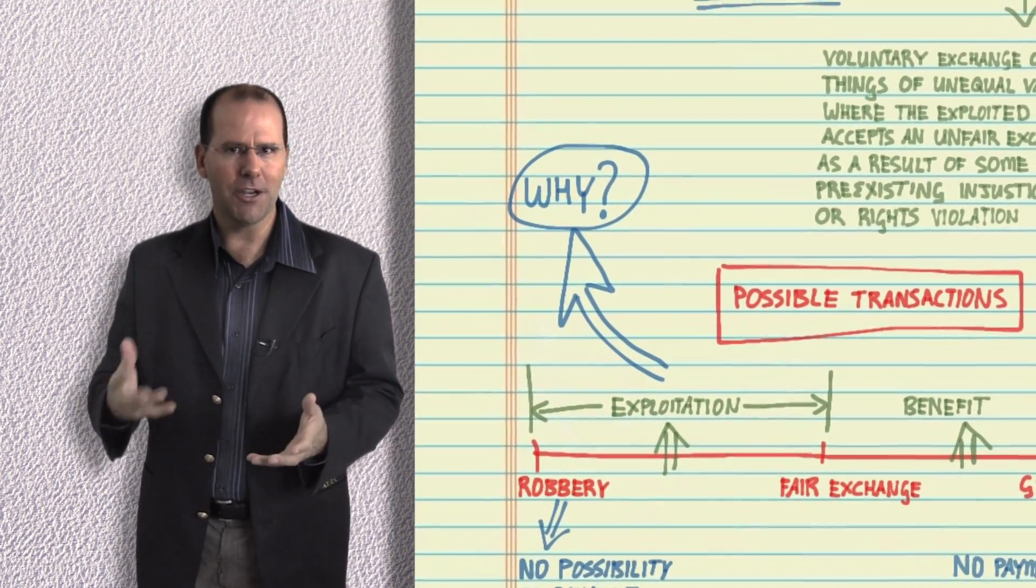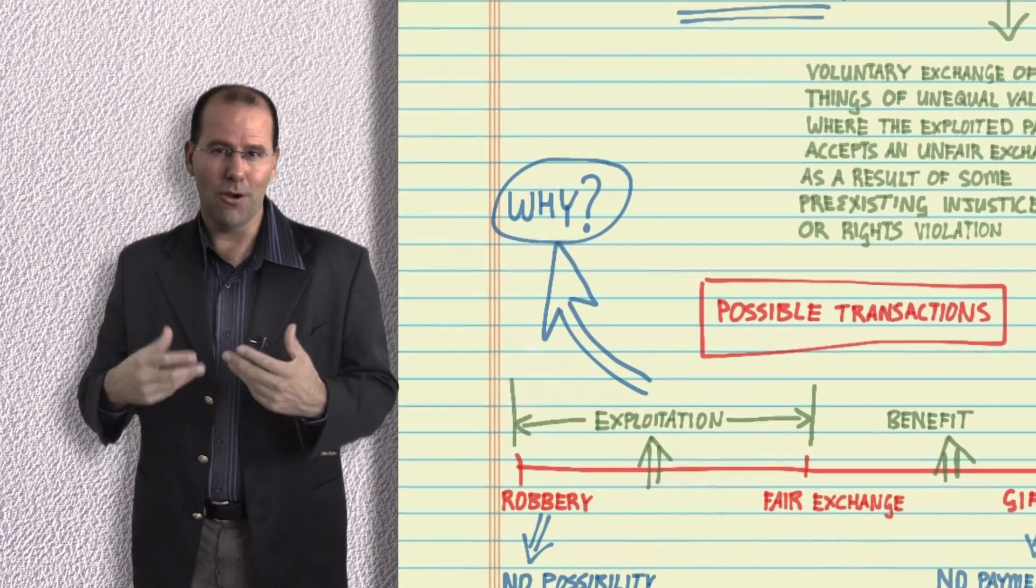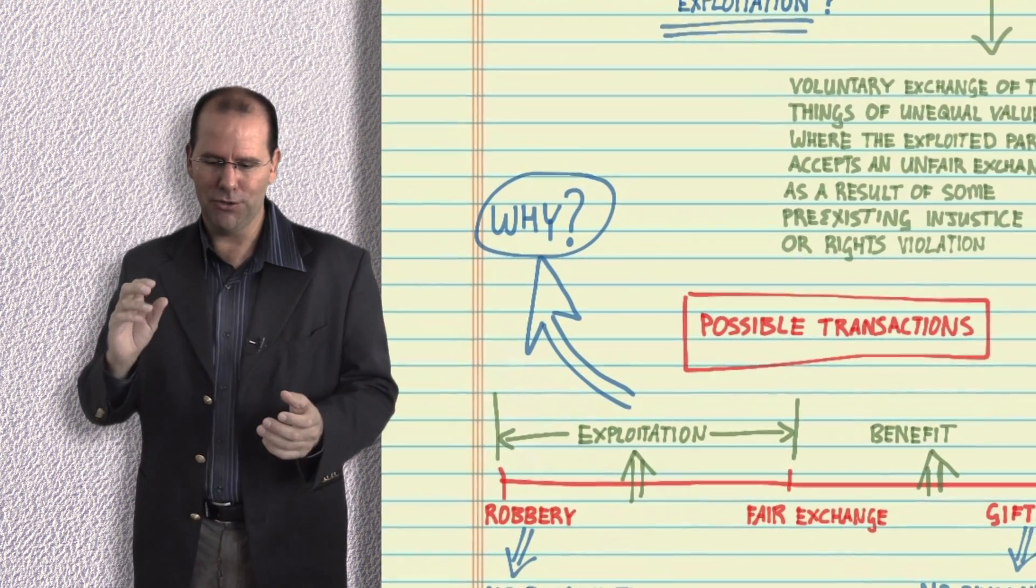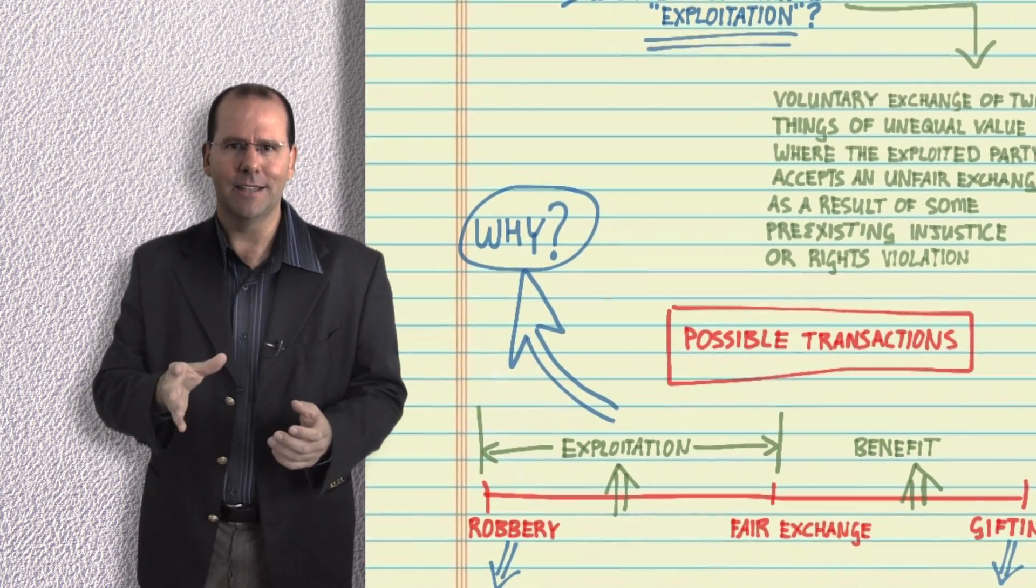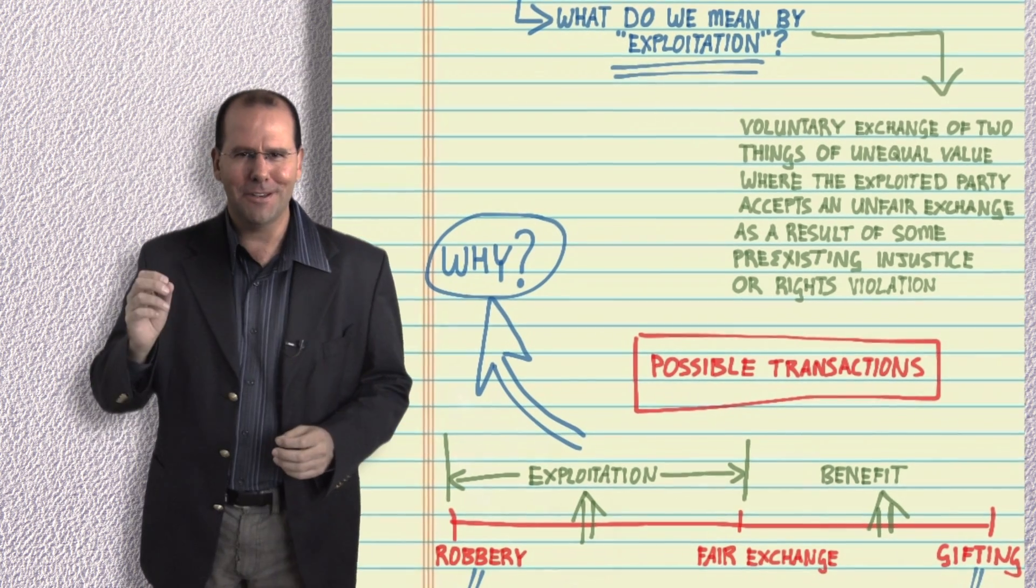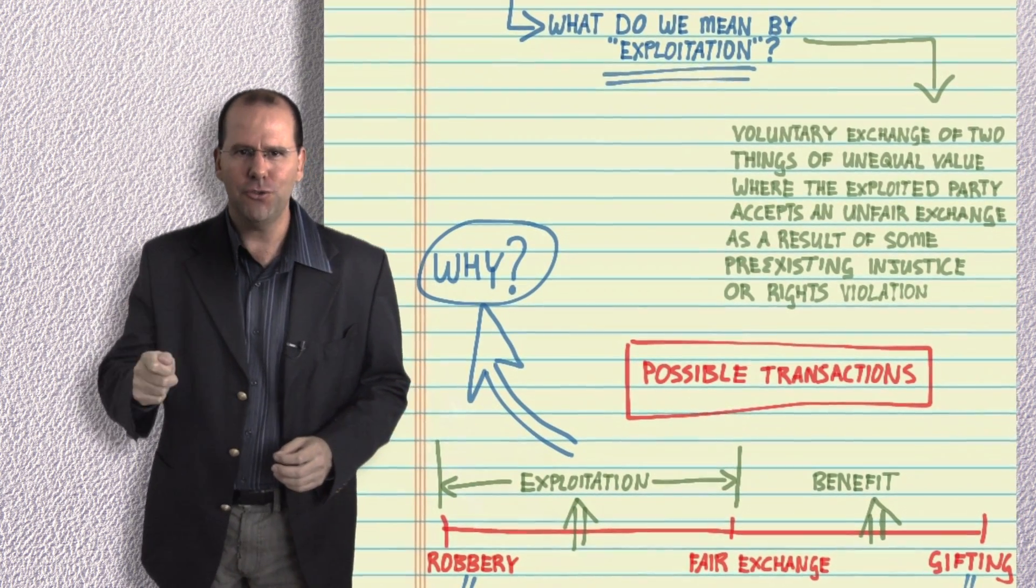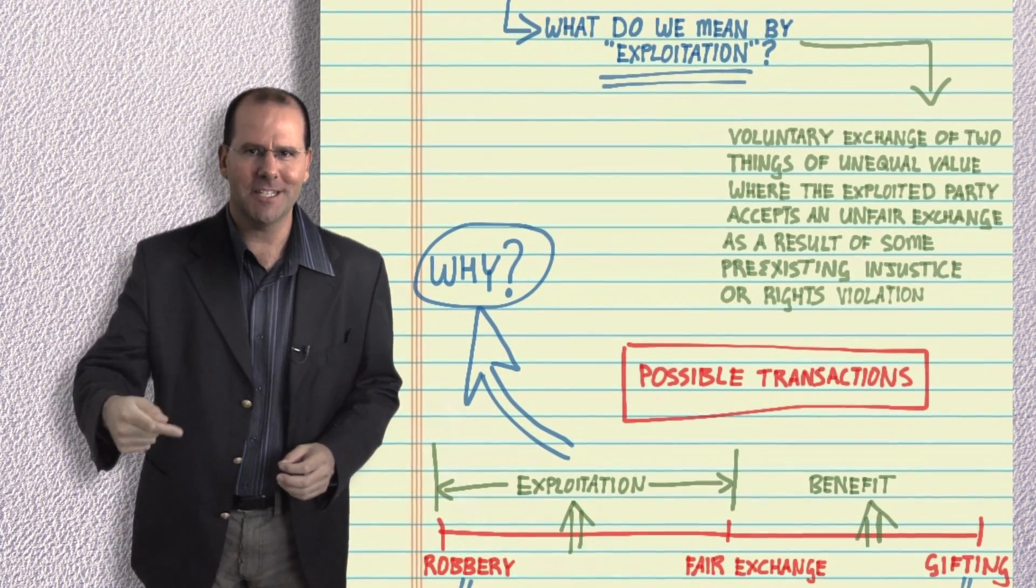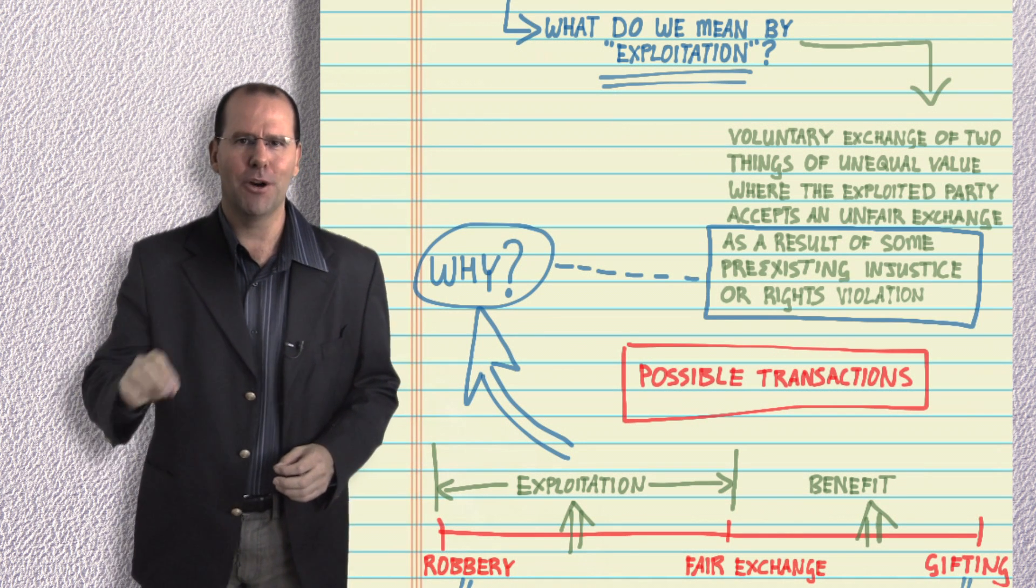Your extreme free marketeer would argue that you can't possibly have exploitation because the value of anything is defined by the price that you can get for it on any given day. However, this fair exchange assumes that there's no background injustice affecting the decision making of the parties concerned.